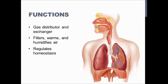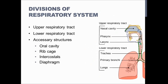The respiratory system can be divided into the upper respiratory tract and the lower respiratory tract. The upper respiratory tract contains the nasal cavity, the pharynx, and the larynx. The pharynx is also broken up into three different divisions: the nasopharynx, the oropharynx, and the laryngopharynx, from top to bottom.